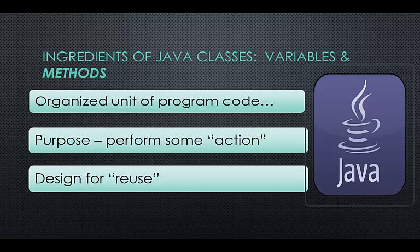Recall the ingredients of Java classes consist of variables and methods. The topics here include talking about methods from a perspective of organized units of program code, their purpose being to perform some action, and the fact that they are designed for reuse.